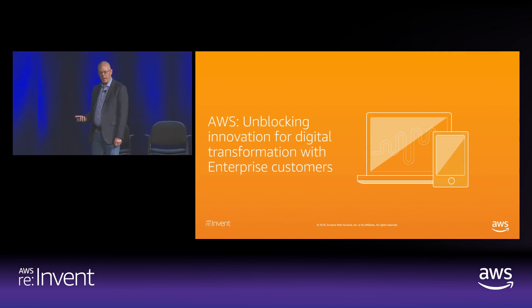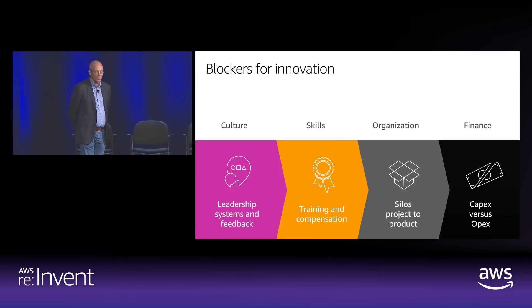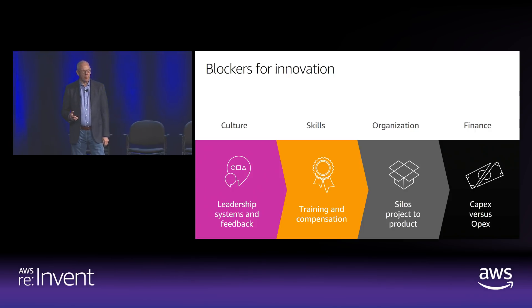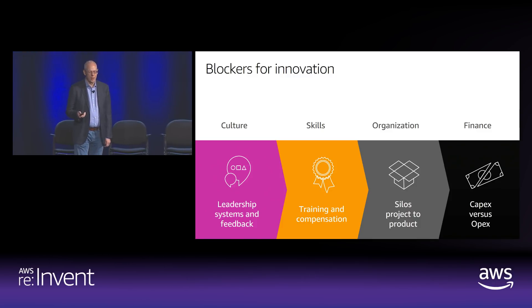AWS is helping unblock innovation and helping customers go through digital transformation. There are a few things that get in the way. I'm going to go through four areas: culture and leadership systems and feedback; skills — how you think about training and compensation; organizational mechanisms, such as whether you're doing projects or running products; and finance — specifically CapEx versus OpEx and how to manage through that transition.